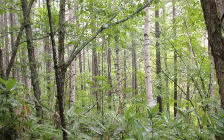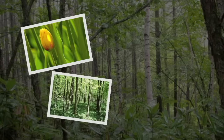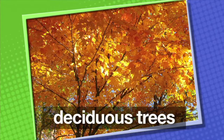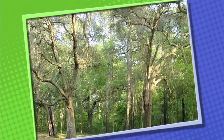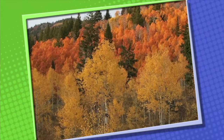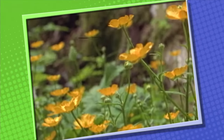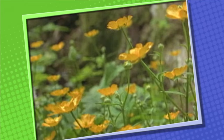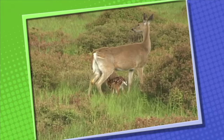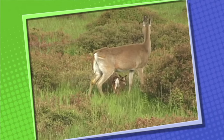A temperate forest has four seasons: spring, summer, autumn, and winter. In a temperate forest, you'll find deciduous trees like maple and oak trees. Deciduous trees drop their leaves in the fall or autumn. Other types of plants found in temperate forests include wildflowers and ferns. Animals that live in a temperate forest habitat have adapted to the four seasons in different ways. For example, deer can find food in every season, even under the snow.